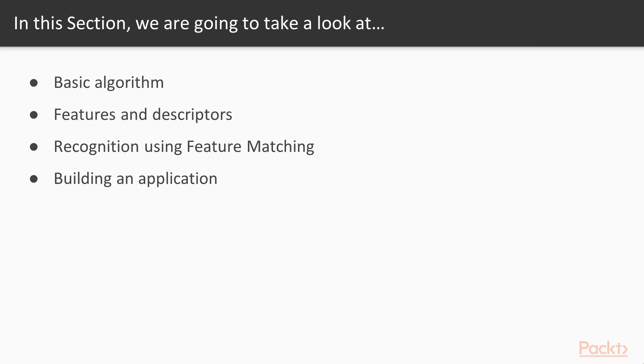First, we look at a generic approach to object recognition. Then we learn more about features and descriptors which we are going to use. After that, we will learn more about feature matching and homography. And we will finish this section by building an application which will be the full code.